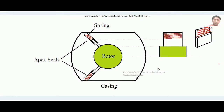Hello students. In this lecture we will learn how Wankel's rotary engine works. Wankel's rotary engine is a sort of rotary engine in which there are no reciprocating parts. You know how a four-stroke engine works — suction, compression, ignition, working, and exhaust. The same four processes happen in Wankel's rotary engine, but in a rotary fashion.